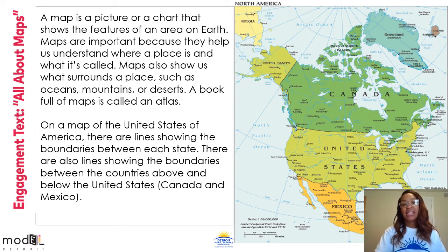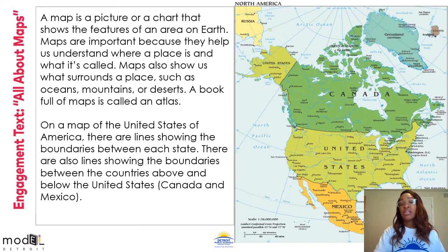Now it's time to read our engagement text, All About Maps. A map is a picture or a chart that shows the features of an area on earth. Maps are important because they help us understand where a place is and what it's called. Maps also show us what surrounds a place, such as oceans, mountains, or deserts. A book full of maps is called an atlas.